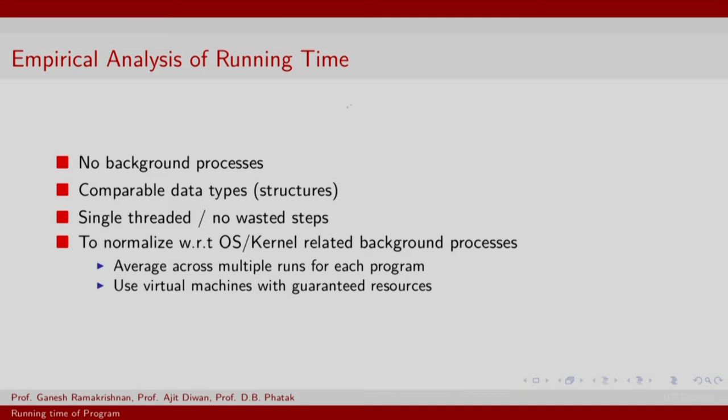So, to do the empirical analysis of running time, need to eliminate or more generally normalize all extraneous factors. Now, what are the extraneous factors? You could have background processes running that affect the wall clock time. So, you should have no background process running.